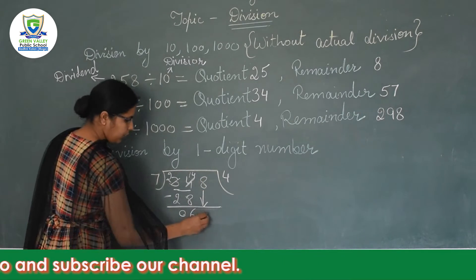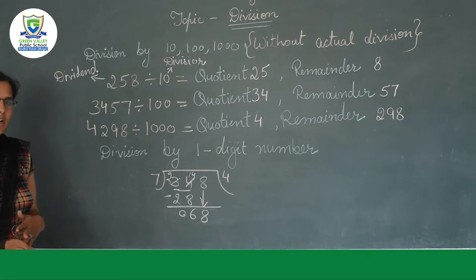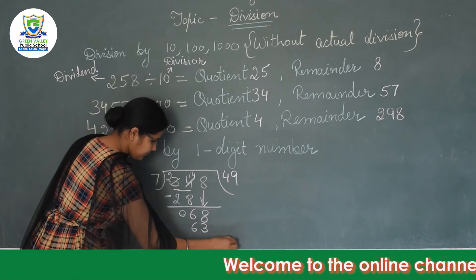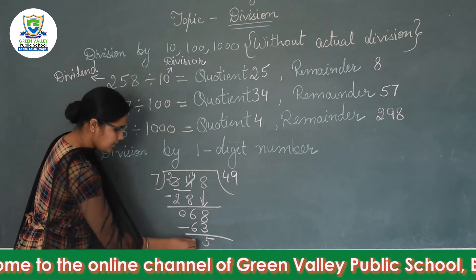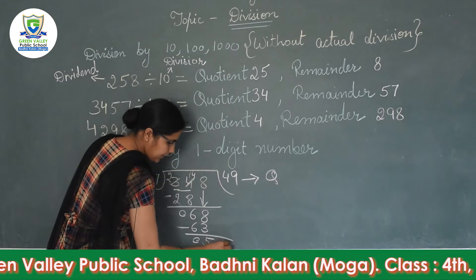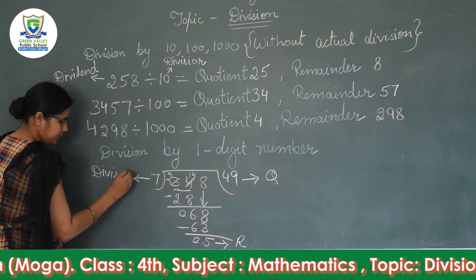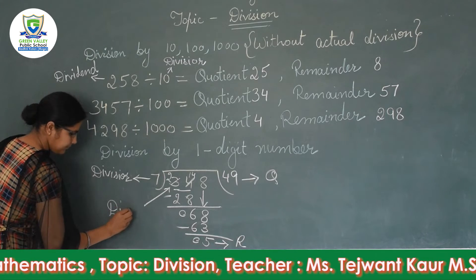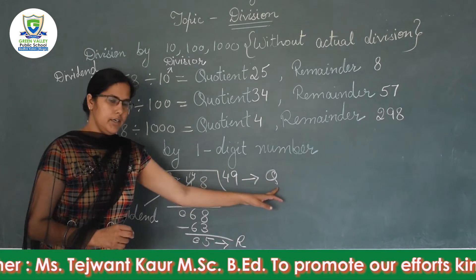We bring down the next digit to get 68. Reading the table of 7, we need a product equal to or less than 68. 7 nines are 63. Subtracting: 8 minus 3 is 5, and 6 minus 6 is 0. So the quotient is 49 and the remainder is 5. The divisor is 7 and the dividend is 348.